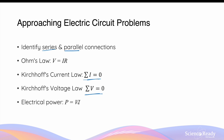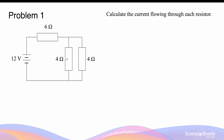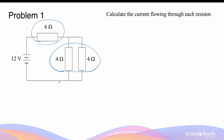Finally, electrical power is equal to the product of voltage and current. Now let's go through the first problem. Before we even read the question, let's break this circuit down into series and parallel components. We can see that there are three resistors — the first is a 6 ohm resistor.